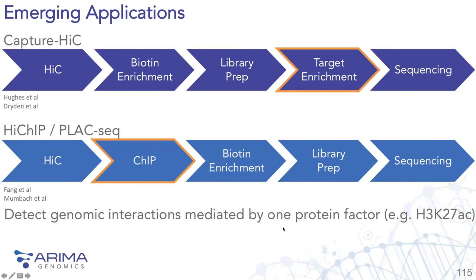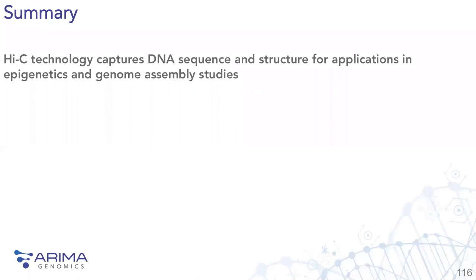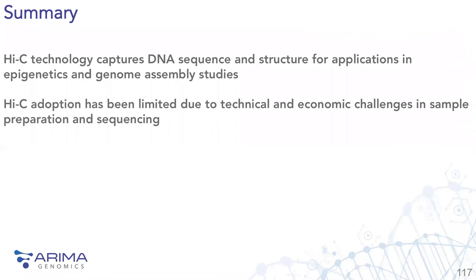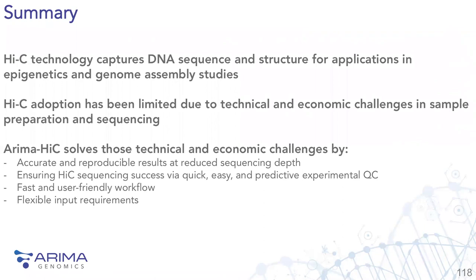In summary: Hi-C technology captures DNA sequence and structure for applications in epigenetics and genome assembly research. Hi-C adoption has been limited due to technical and economic challenges in sample prep and sequencing. ARIMA Hi-C aims to solve those challenges by providing accurate and reproducible results at reduced sequencing depth, ensuring success via quick, easy, and predictive QC checkpoints, a fast and user-friendly workflow, and very flexible sample input requirements.